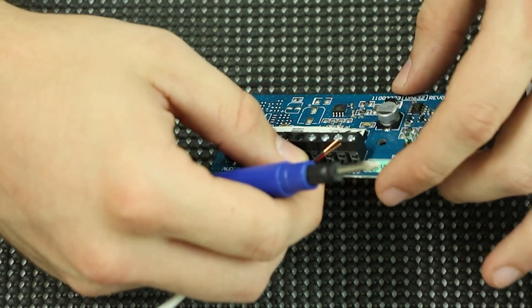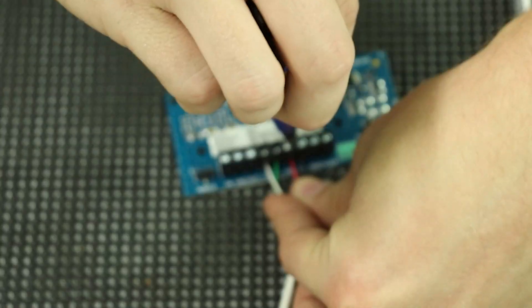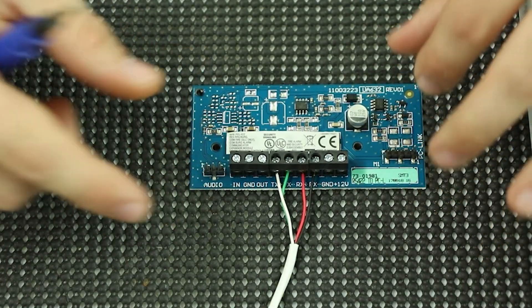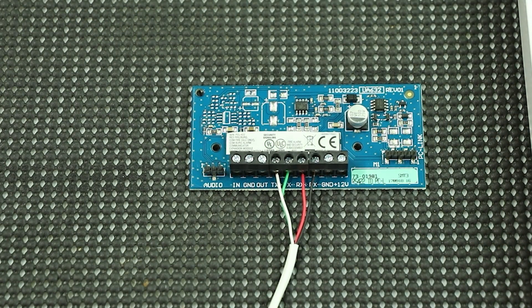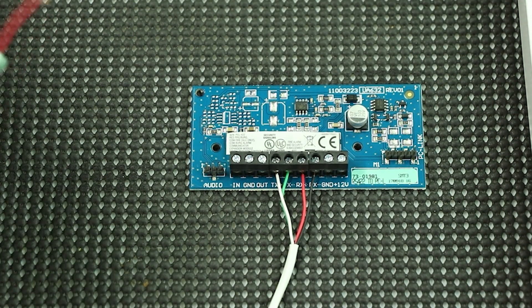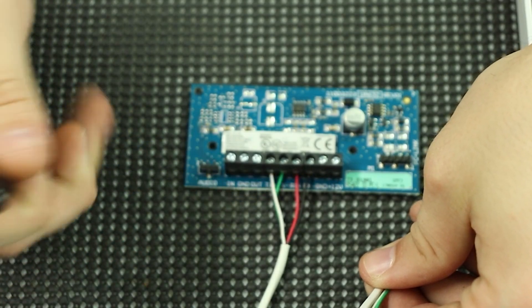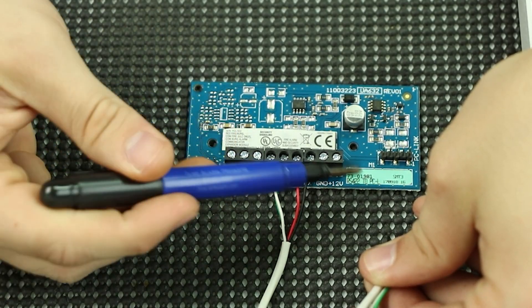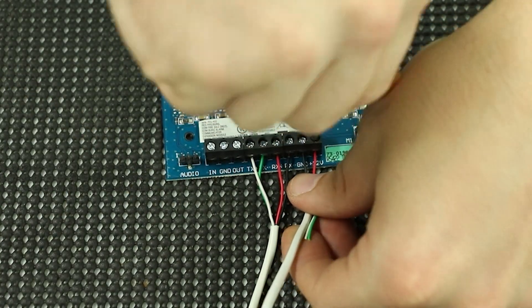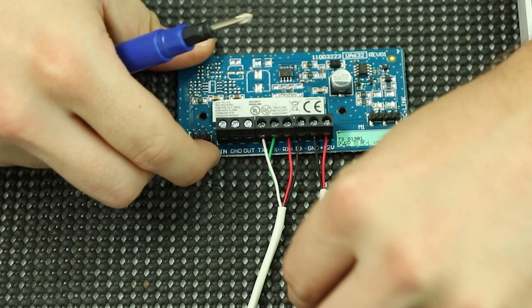There are those four wires. Let's go ahead and connect the power wires and those are going to go on the 12 volt positive and the ground on the right side of the board as you're looking at it. Make sure you get them snug so they don't come out, but don't over-tighten; you can break the terminals.